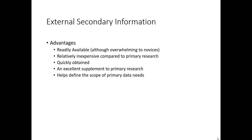Secondary information can also help you define the scope of your primary data needs. Any marketing research project should start with a search for internal and external secondary information. If those sources don't adequately address the question, then the gaps in information make it much clearer what types of information must be gathered through primary data collection.